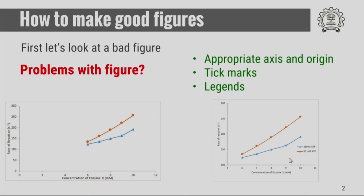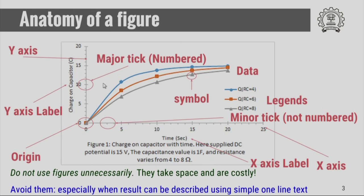The curve shown on the right hand side is an example of a good figure. In this case, the person has chosen the appropriate origin — the origin is not (0,0) — and therefore it is utilizing the entire available space. There are enough major tick marks and minor tick marks, and the legends have been shown. It is clearly indicated that the blue curve corresponds to 25 millimole of ATP and the orange curve corresponds to 50 millimole of ATP.